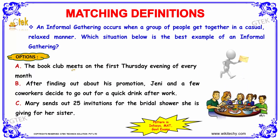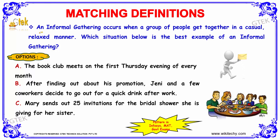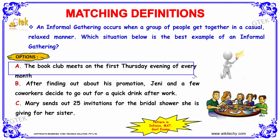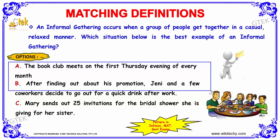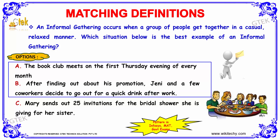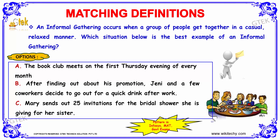Let us move on to our next interesting question. An informal gathering occurs when a group of people get together in a casual, relaxed manner. Which situation below is the best example of an informal gathering? Option A: The book club meets on the first Thursday evening of every month. Option B: After finding out about his promotion, Jenny and a few co-workers decided to go out for a quick drink after work. Option C: Mary sends out 25 invitations for the bridal shower she is giving for her sister.